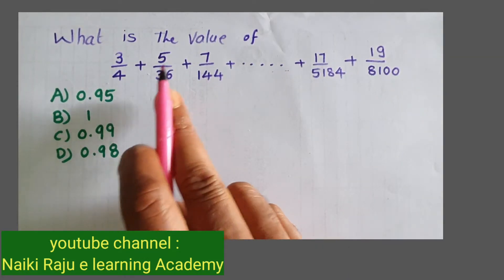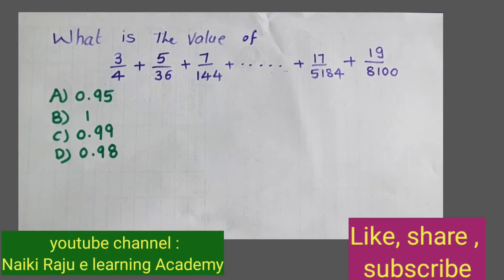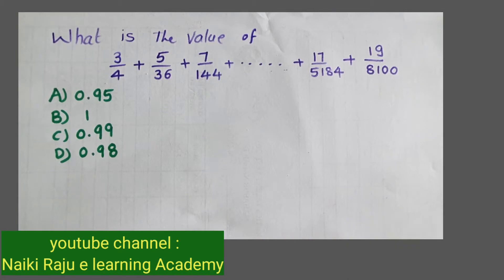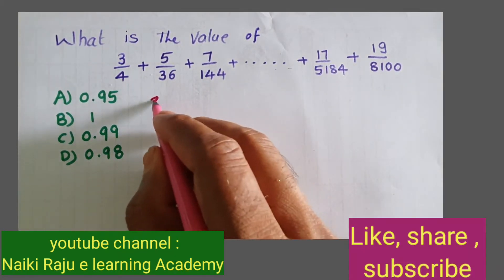Observe the question. First, 3/4 is 0.75, 5/36... If we do division it will be a problem. With logical understanding, we can solve this problem easily.